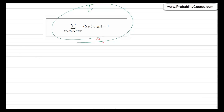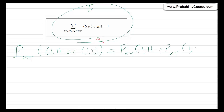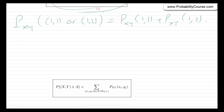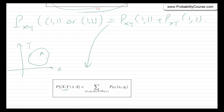If you want any probability, you should be able to use the joint PMF to calculate it. For example, if you want the probability that (x, y) equals (1, 1) or (1, 2), you add the probabilities for those two points. More generally, if you want the probability that the pair (x, y) belongs to any set A in the two-dimensional plane, you look at how many points are in A and add the probabilities at those points.